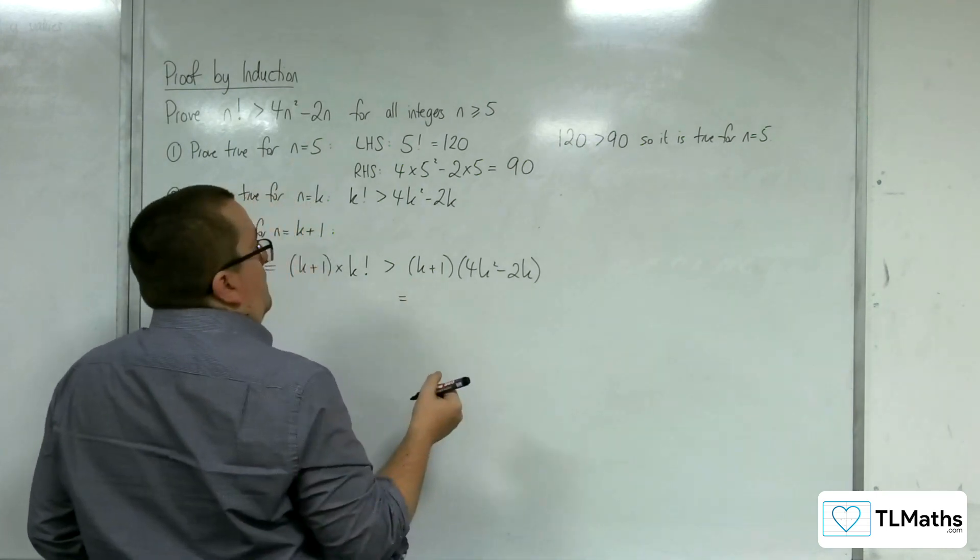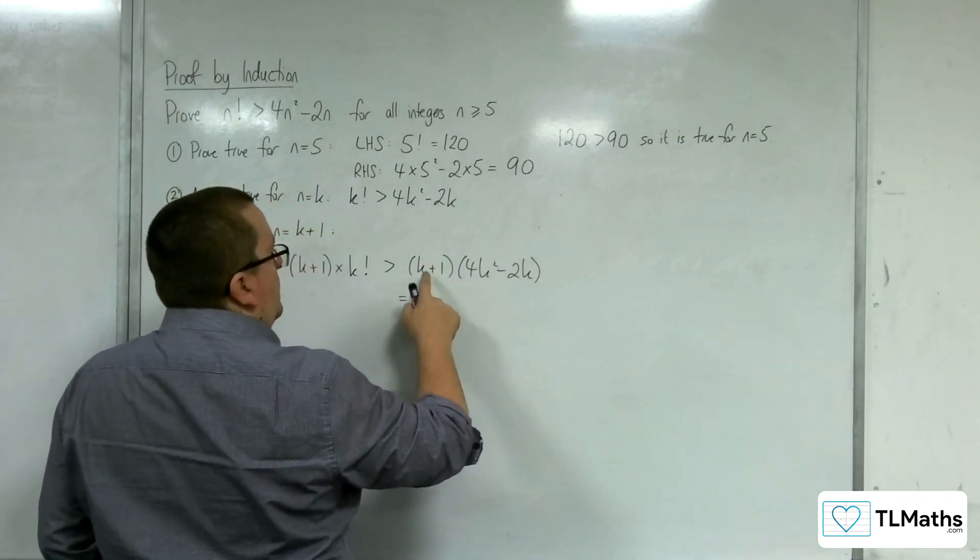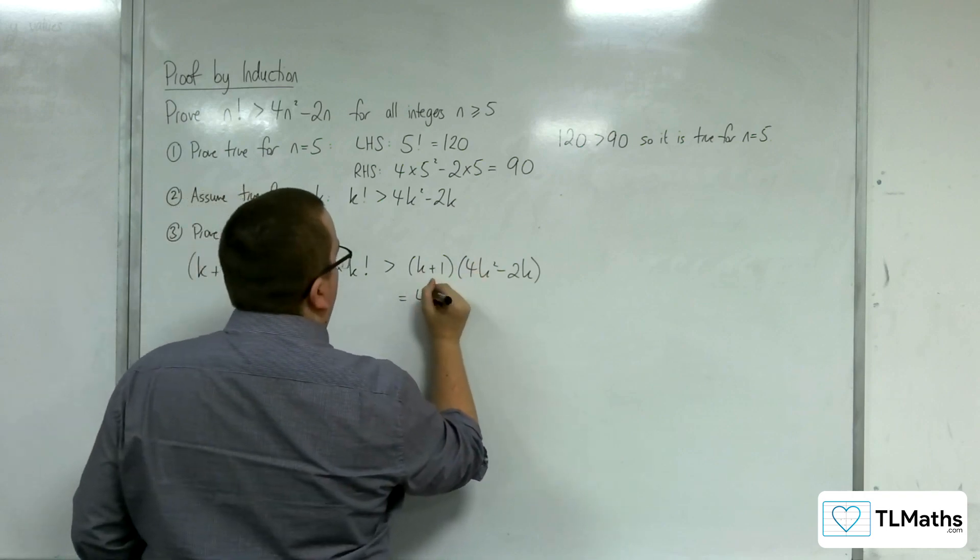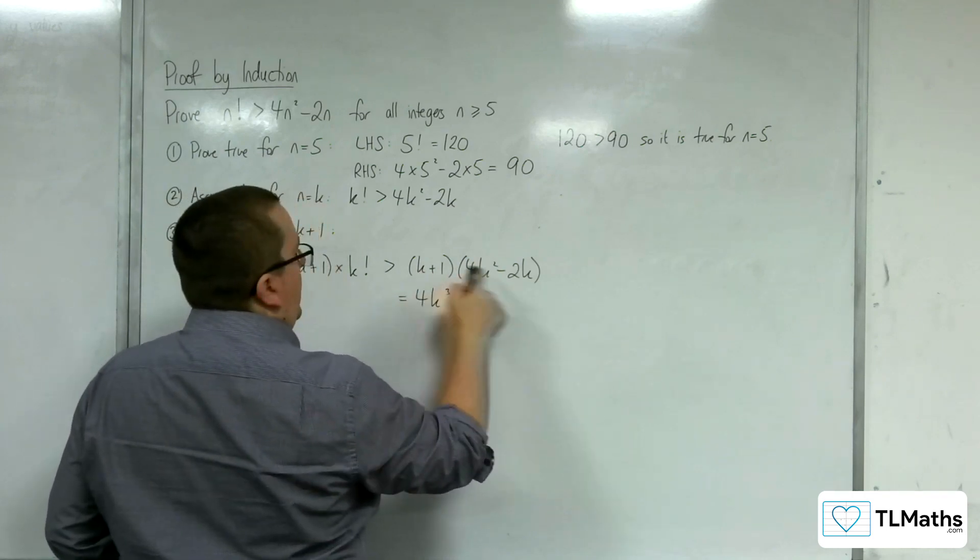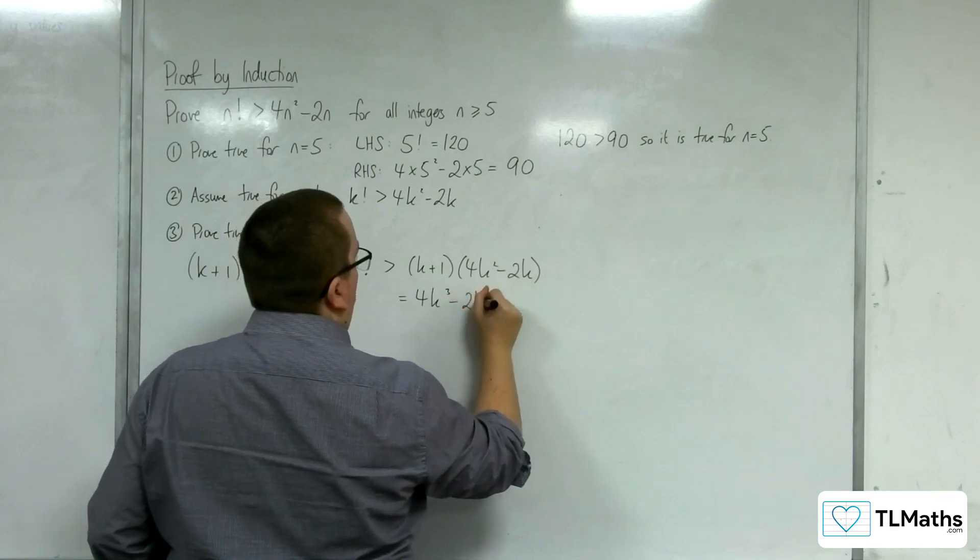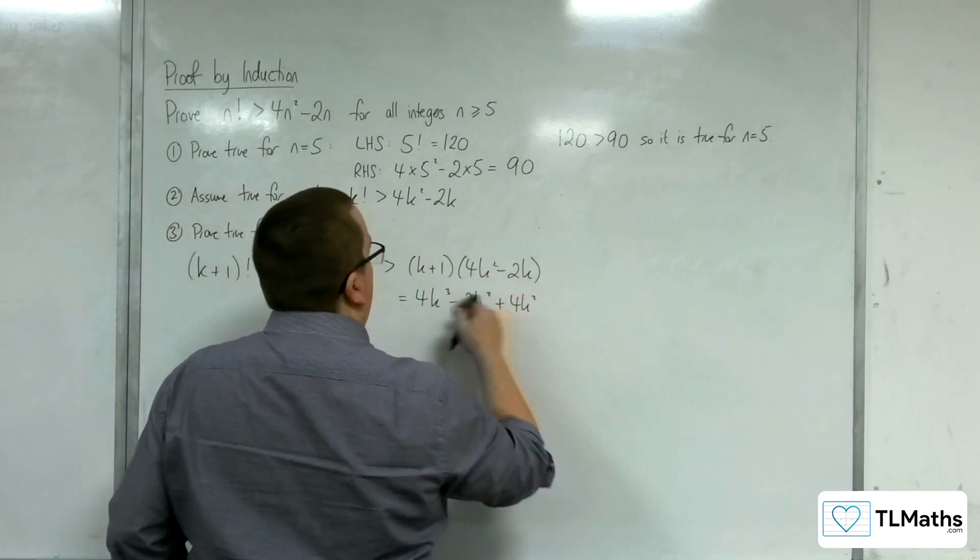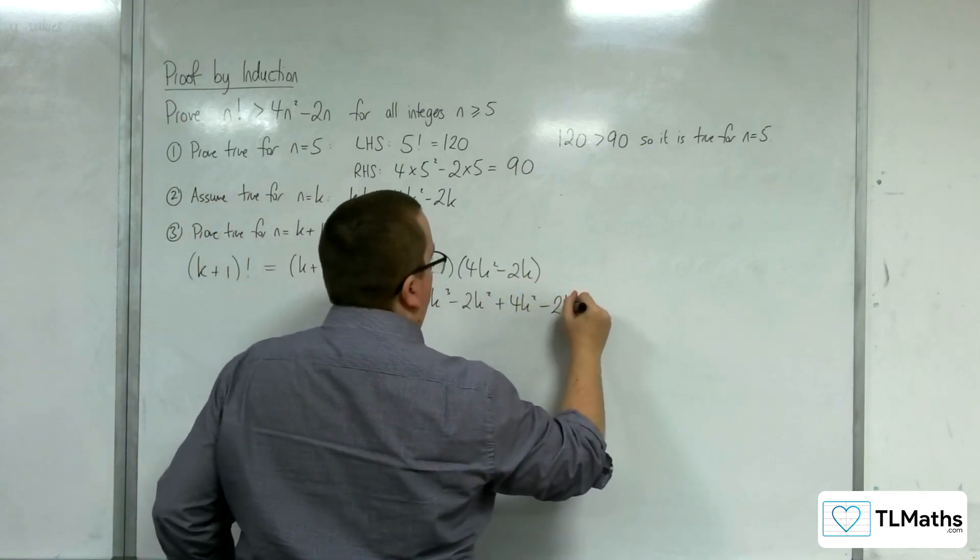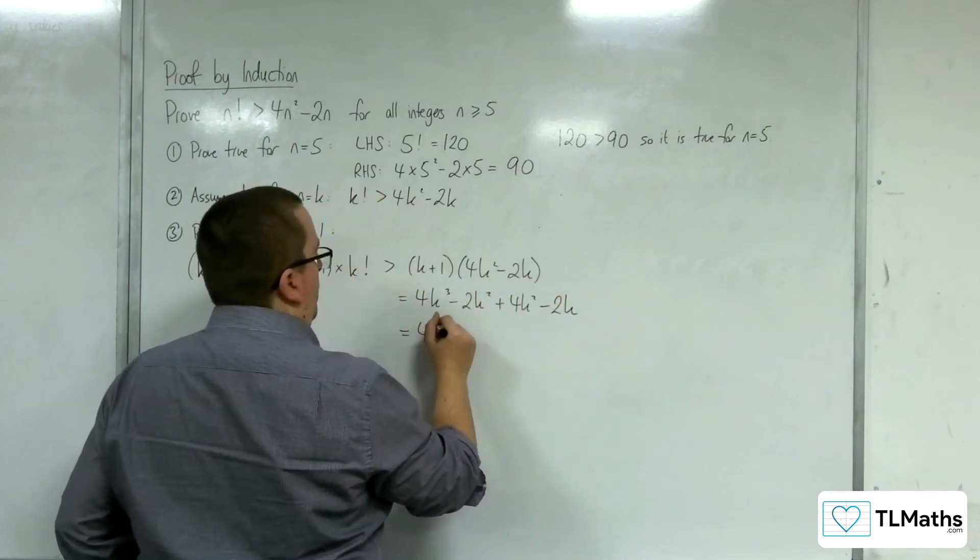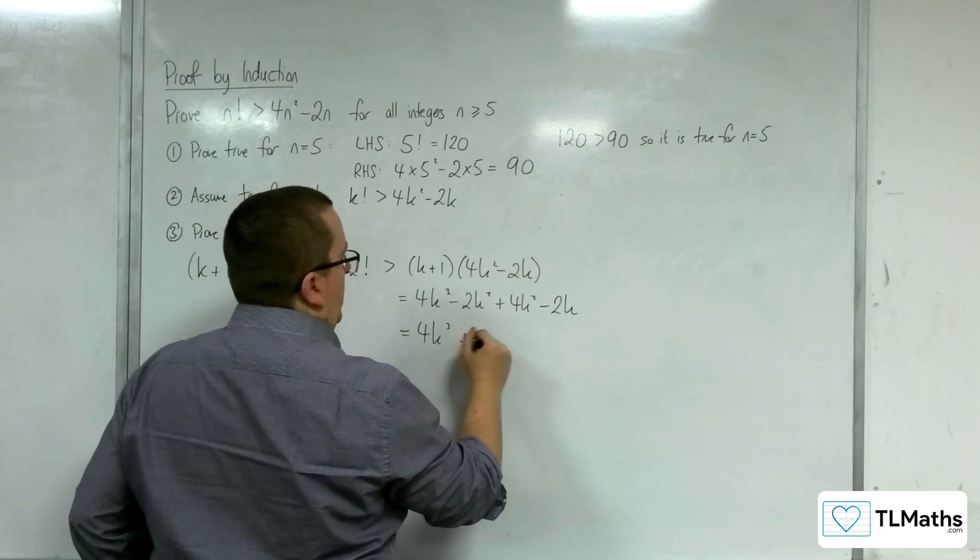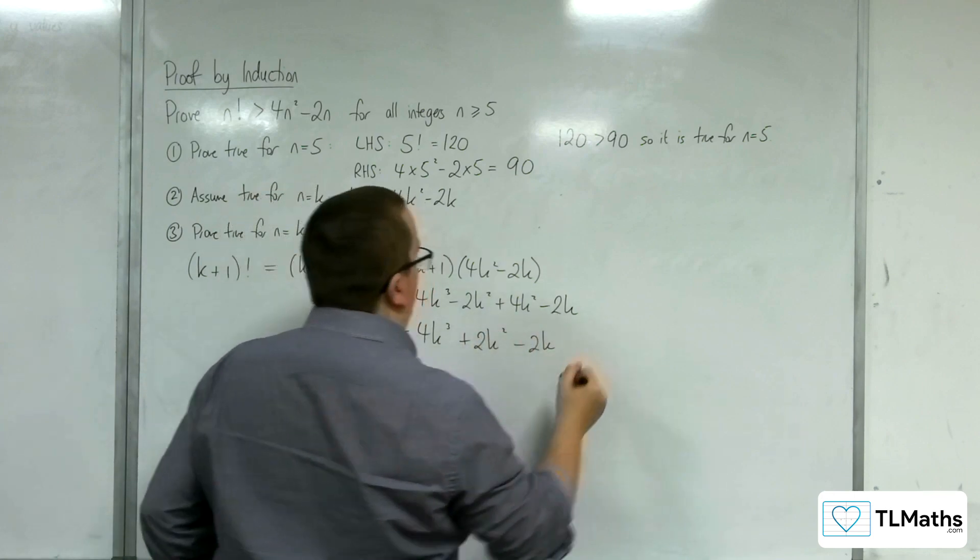So what do we have here? We have k times 4k squared, so 4k cubed. k times minus 2k is minus 2k squared. One lot of 4k squared and one lot of minus 2k. So tidying that up, we've got 4k cubed plus 2k squared take away 2k.